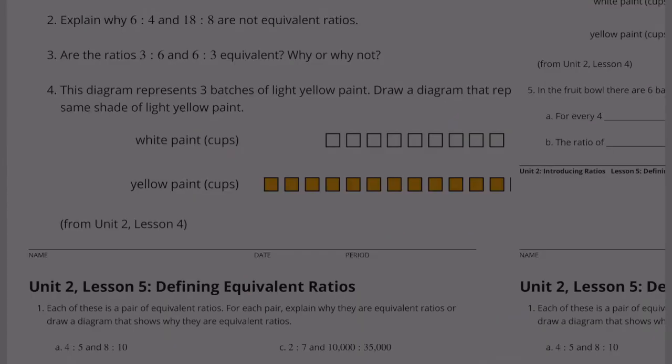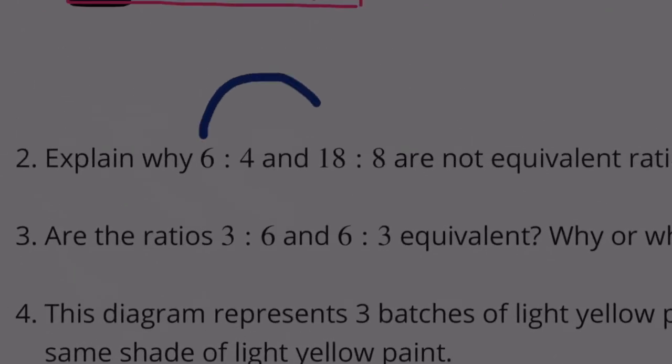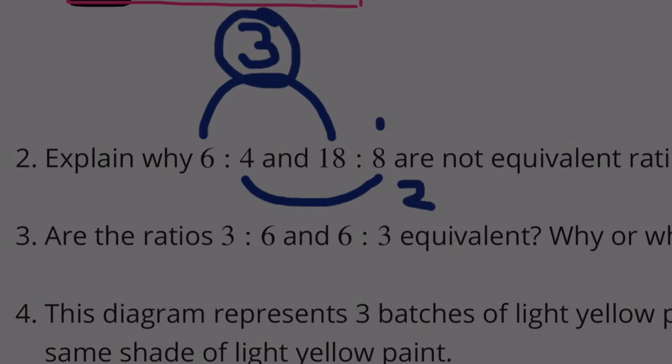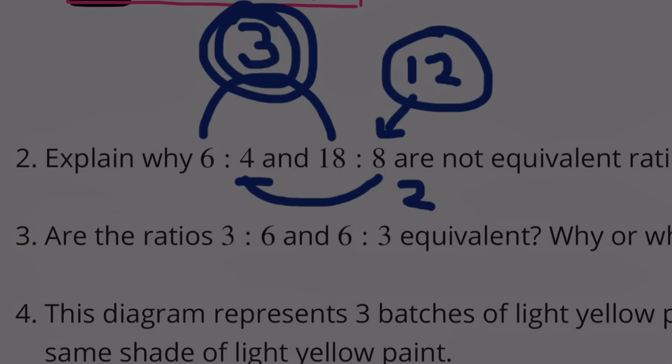Number 2: Explain why 6 to 4 and 18 to 8 are not equivalent ratios. 6 to 18 means that 6 became 3 times greater, so 6 times 3 equals 18. 4 to 8 is only 2 times greater, not 3 times greater. What would make this equivalent is if this were a 12. 4 times 3 would equal 12. 6 times 3 gets you to 18. They're not equivalent ratios.